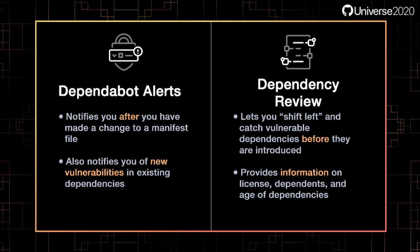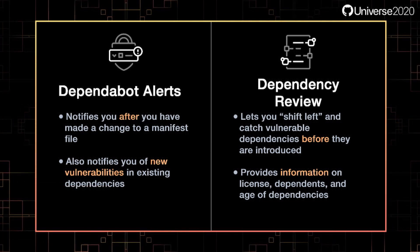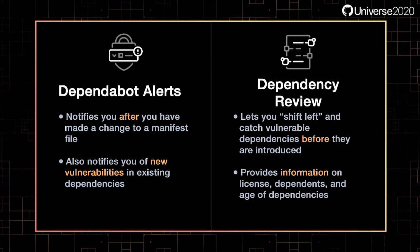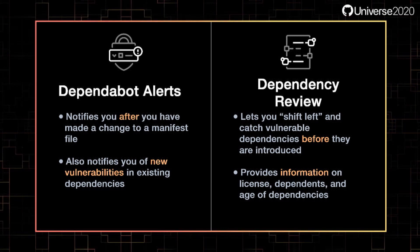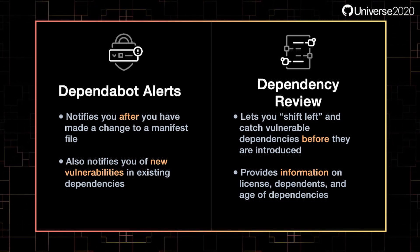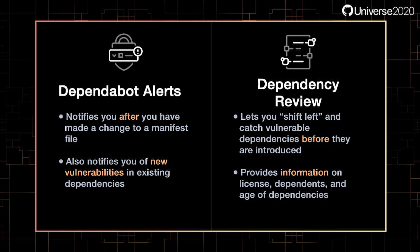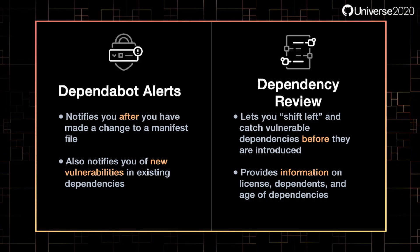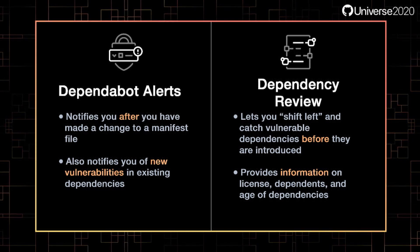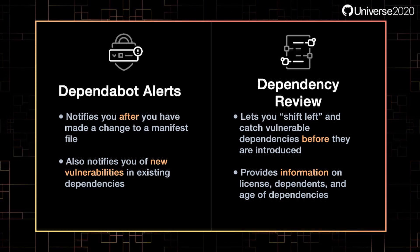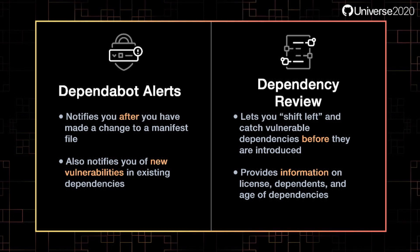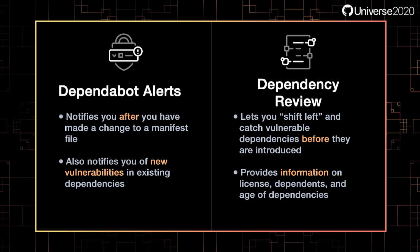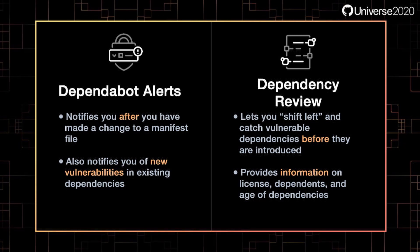So how does this work with Dependabot alerts? Dependabot alerts helps you react to vulnerabilities that already exist in your dependency manifests or when new vulnerabilities are discovered in existing dependencies. It will also catch changes that are pushed directly to the repository. Dependency review helps you shift left, catching vulnerable dependencies before they're introduced, as well as giving you more context about those dependencies. They're complementary and you should use both.